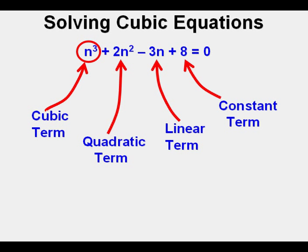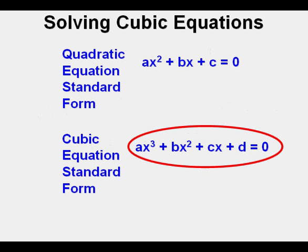In this equation, the cubic term is n cubed, the quadratic term is 2n squared, the linear term is negative 3n, and the constant term is 8. The standard form of a cubic equation is ax cubed plus bx squared plus cx plus d equals 0, and the standard form of quadratic equation is shown above for basis of comparison.